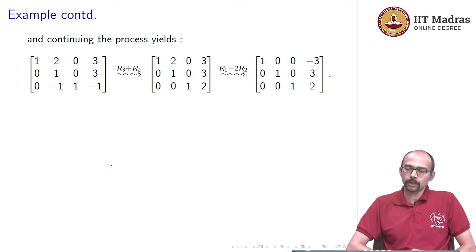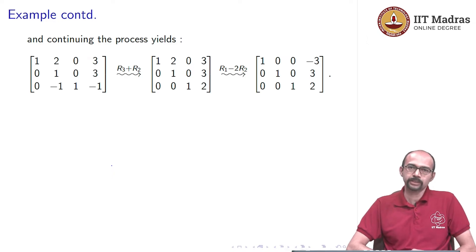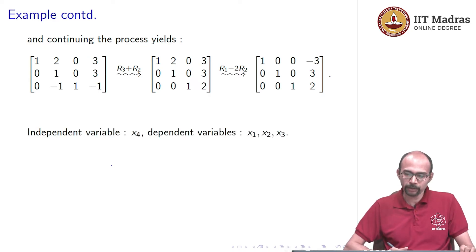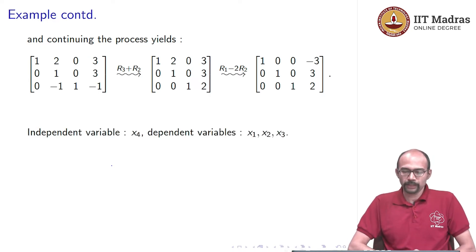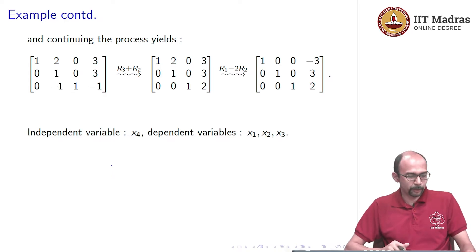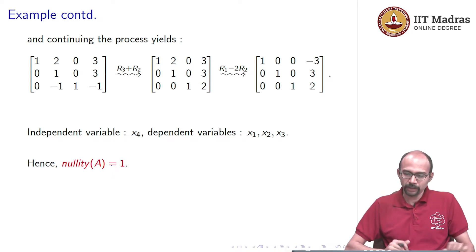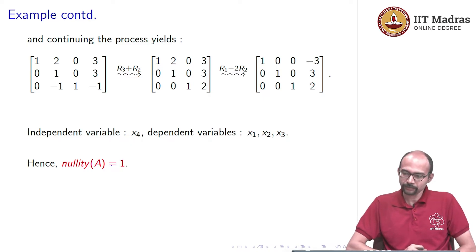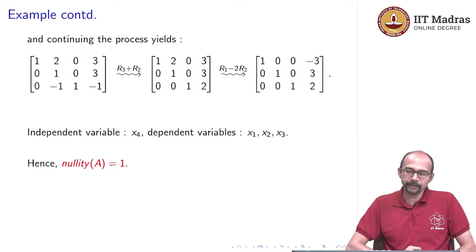Now let us ask what are the dependent and independent variables. The leading ones are in the first, second, and third columns. That means x1, x2, x3 are dependent variables, and x4 is an independent variable. So the nullity of A is 1, because the nullity corresponds to the number of independent variables.